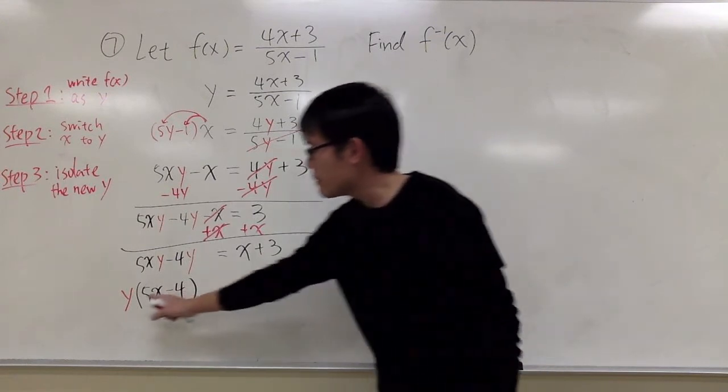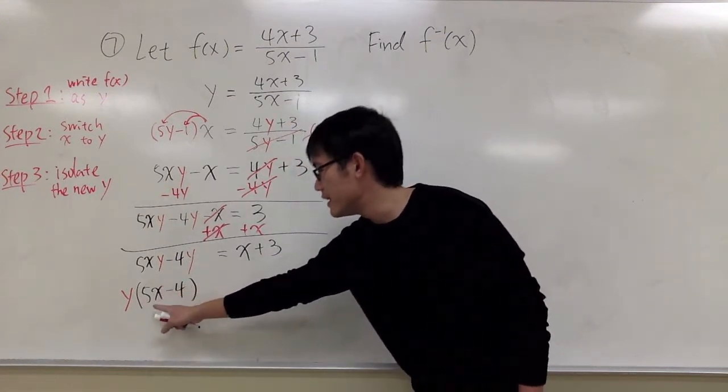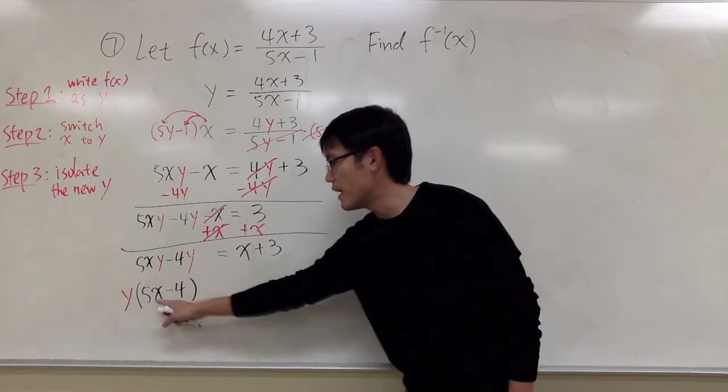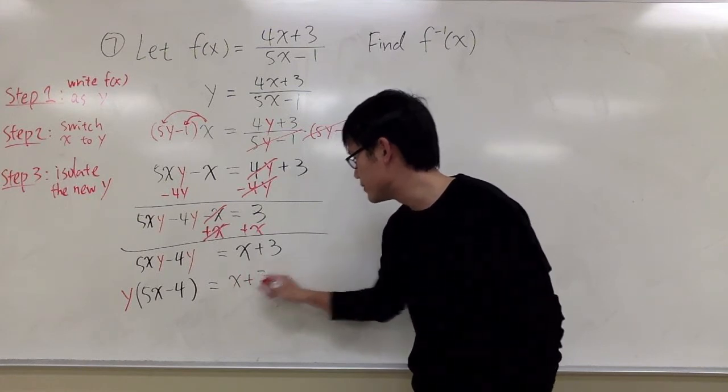So I factor out the y, I bring out the y outside of the parentheses, and in the parentheses, I have 5x minus 4, that equals to x plus 3.